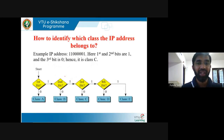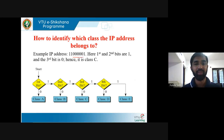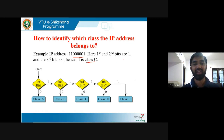How to identify which class an IP address belongs to in binary format: if the starting bit is 0, it is Class A. If the starting bits are 1, 0, it is Class B. If the starting bits are 1, 1, 0, it is Class C. If the starting bits are 1, 1, 1, 0, it is Class D. If the first four bits are all 1, it is Class E. For example, an IP address starting with 11000001 has first two bits as 1 and third bit as 0, so it is Class C.